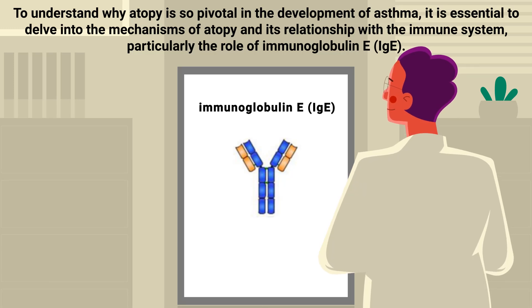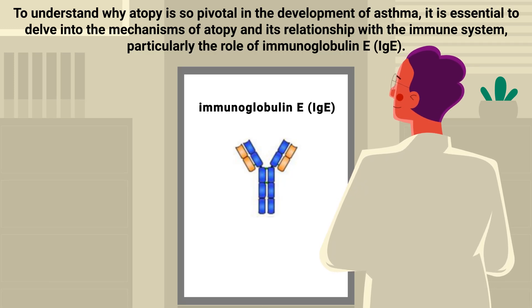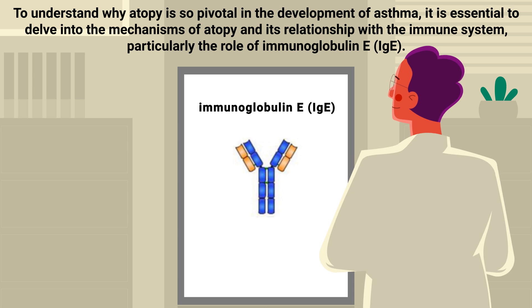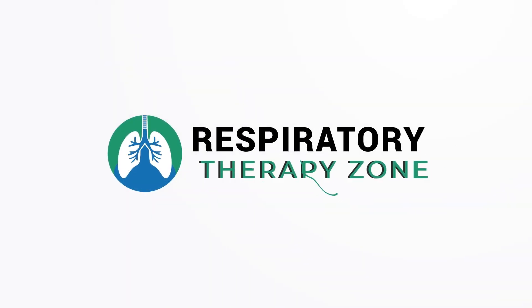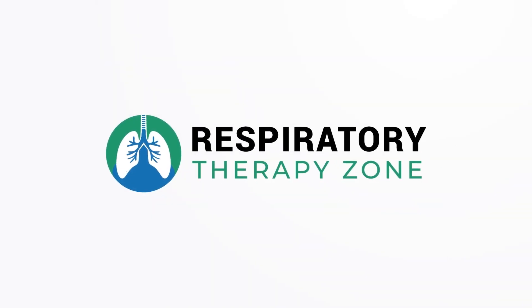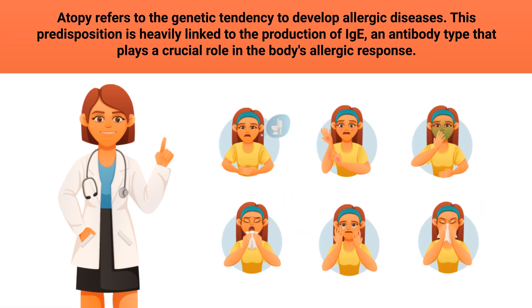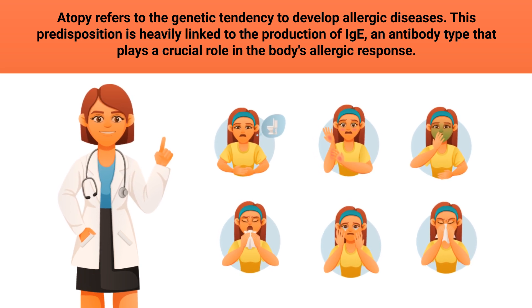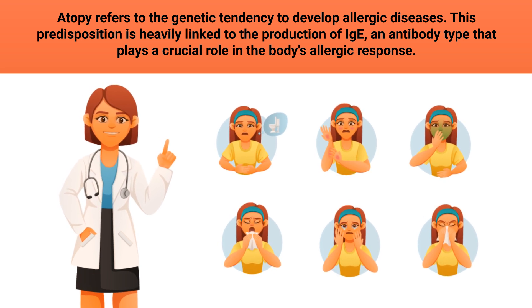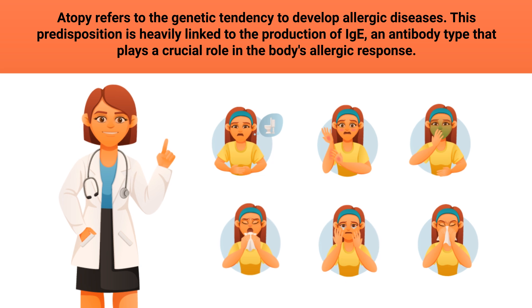To understand why atopy is so pivotal in the development of asthma, it is essential to delve into the mechanisms of atopy and its relationship with the immune system, particularly the role of immunoglobulin E, or IgE. Atopy refers to the genetic tendency to develop allergic diseases.